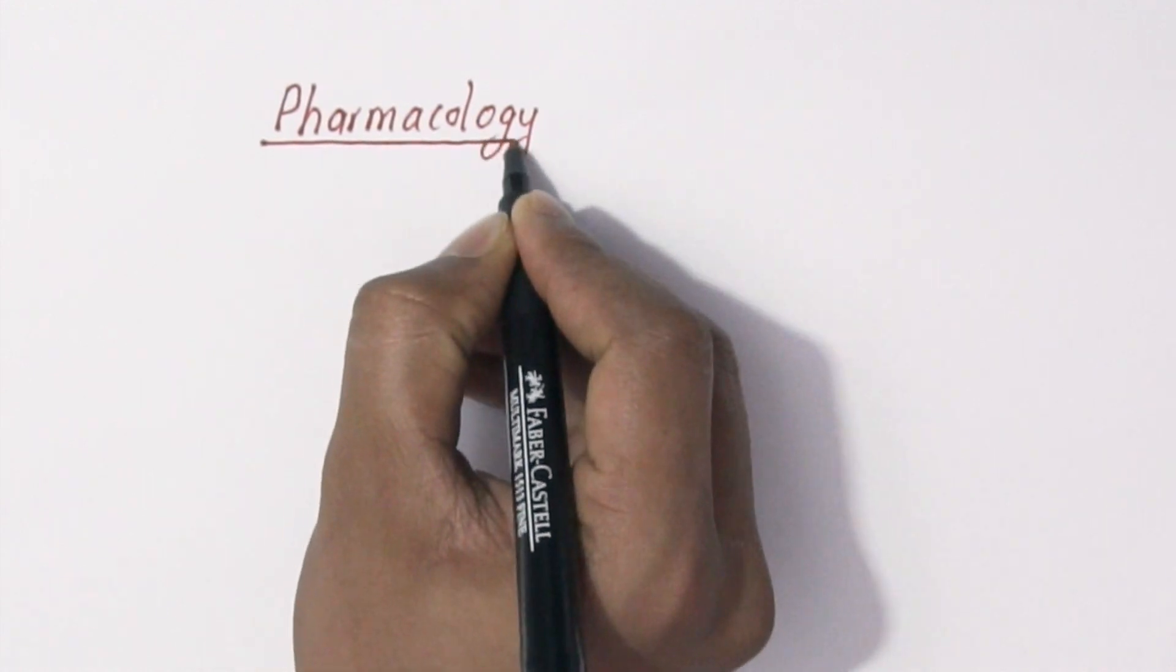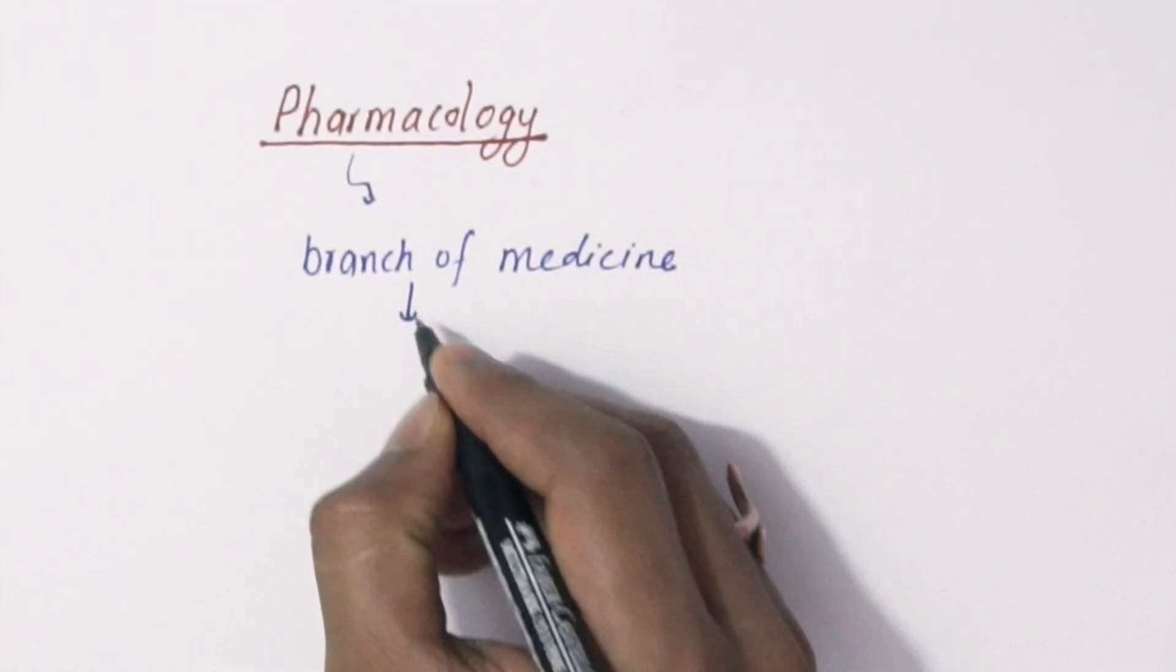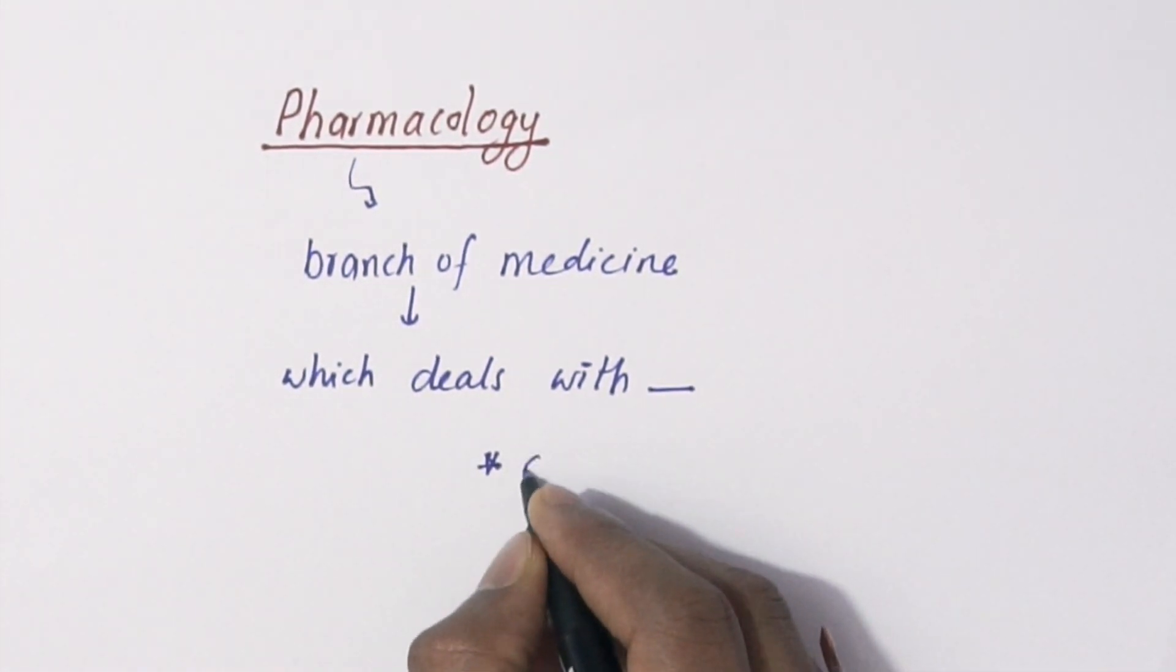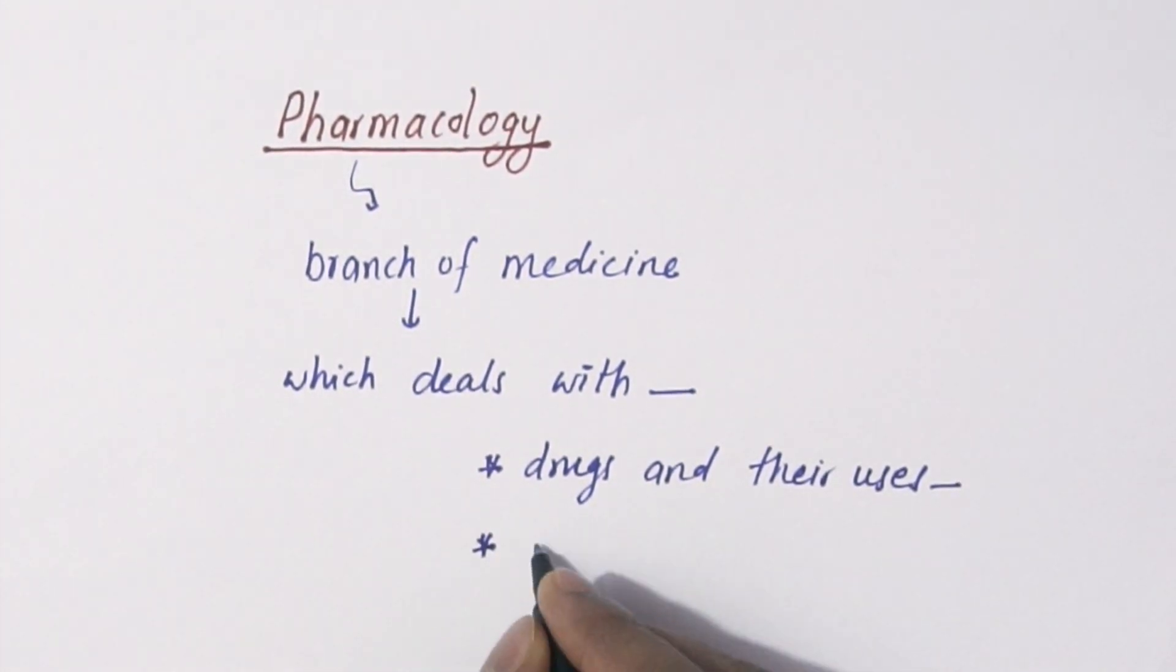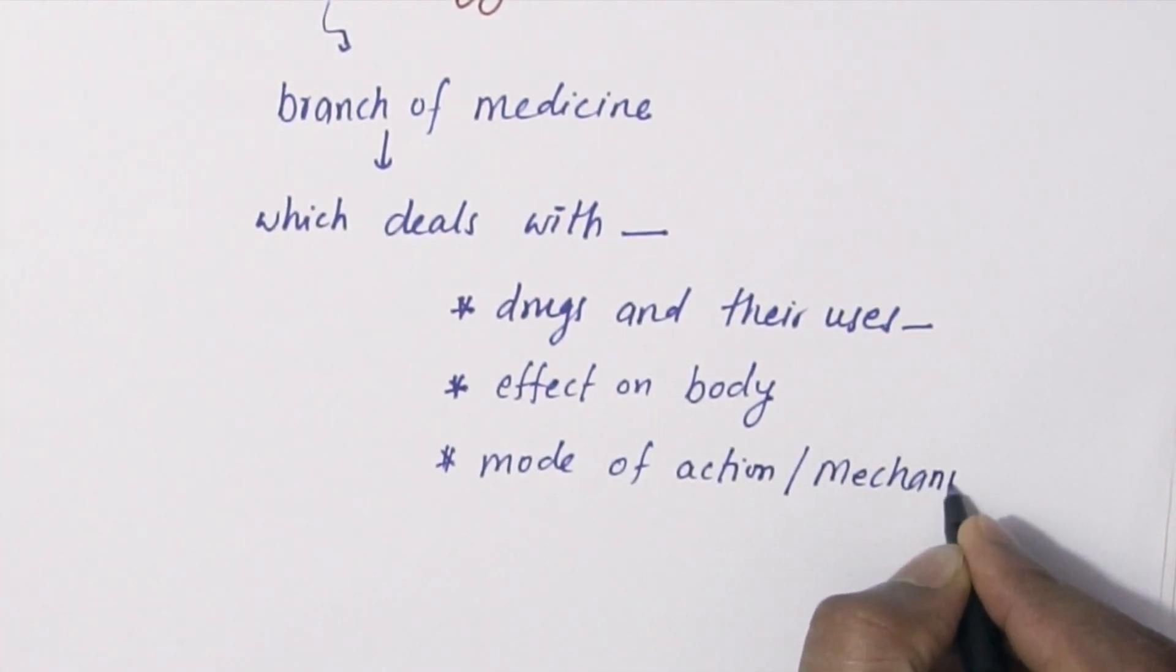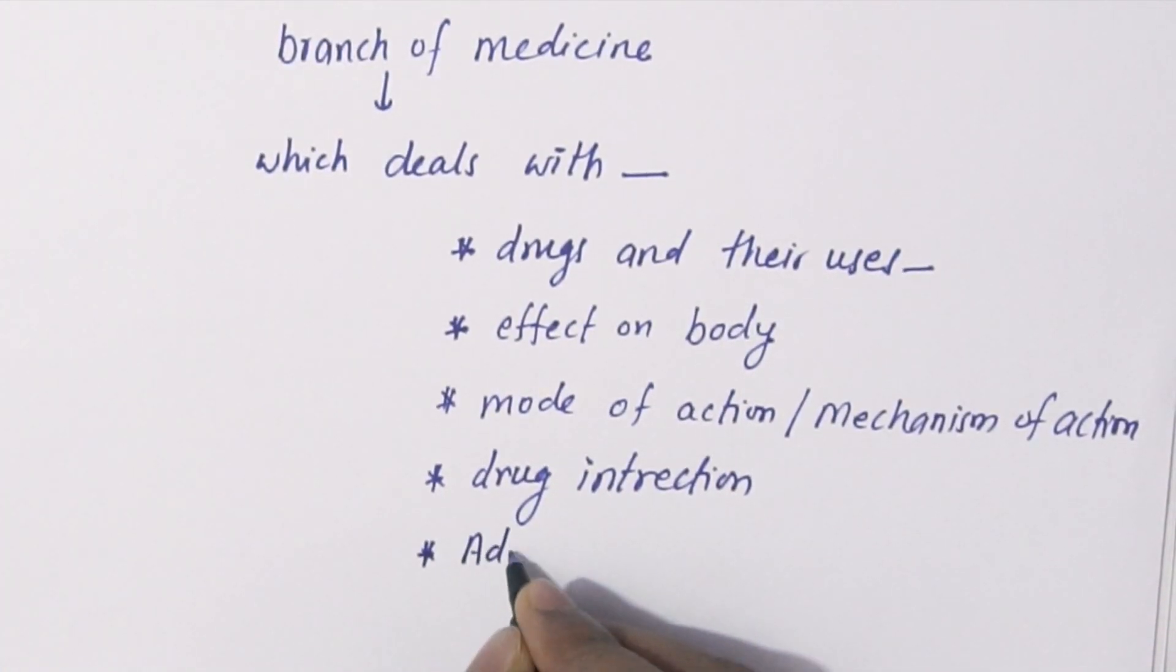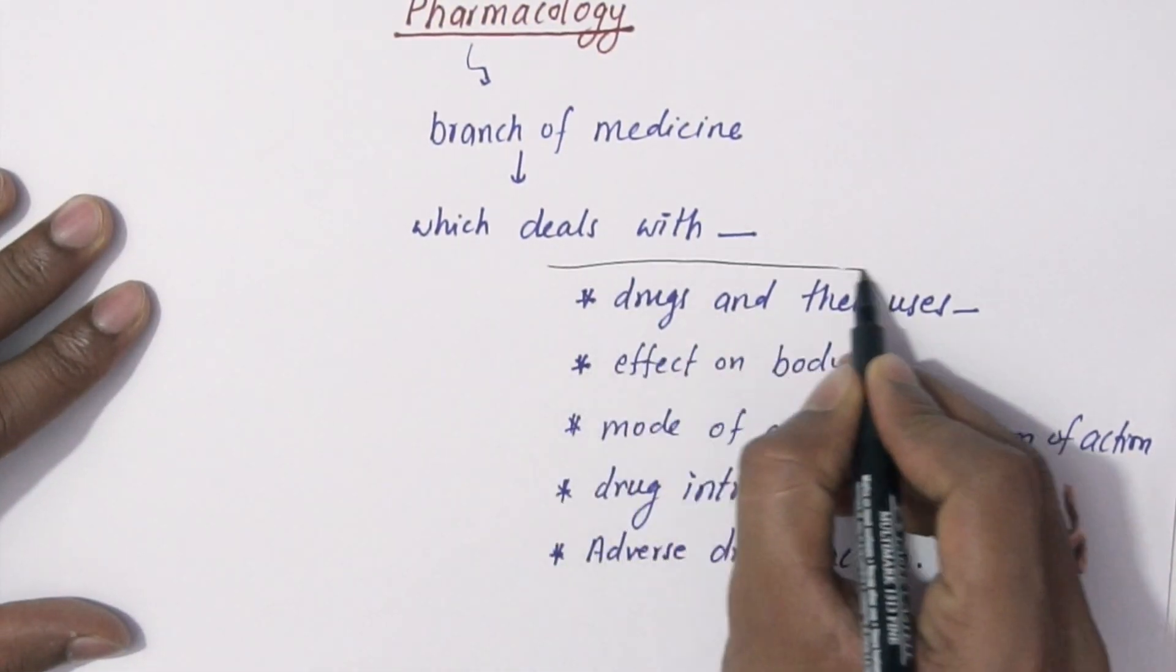Now we'll define pharmacology. Pharmacology is the branch of medicine which deals with or explains various information related to drugs, like drugs and their usage, effects on body, how they are going to affect our body system, how they work—that is mode of action or mechanism of action—and how they will interact with other drugs or food or other chemicals, and adverse drug reactions or side effects.